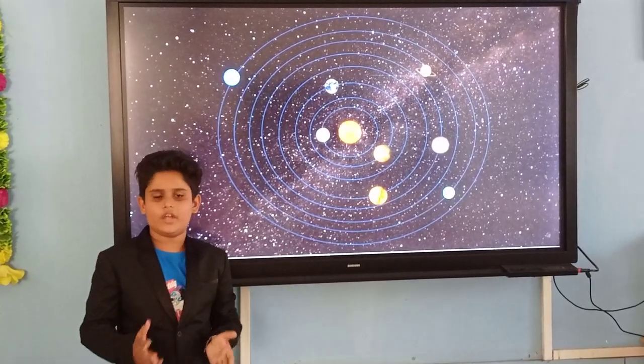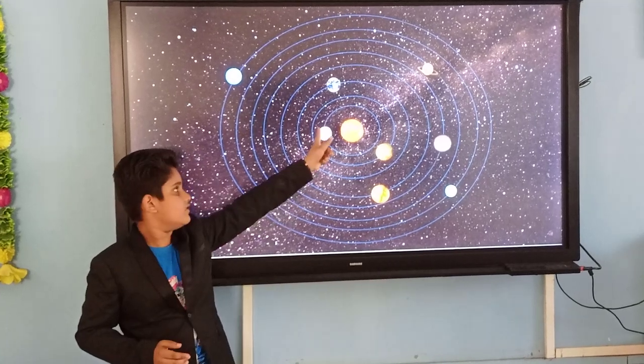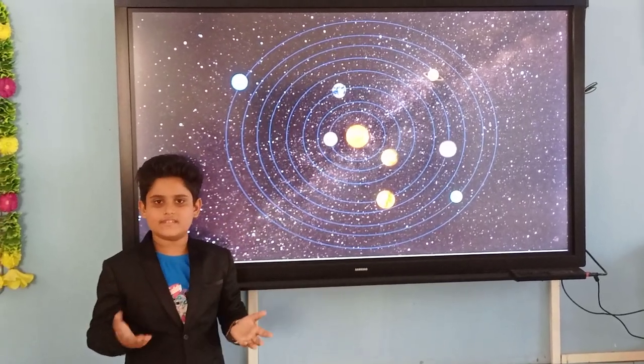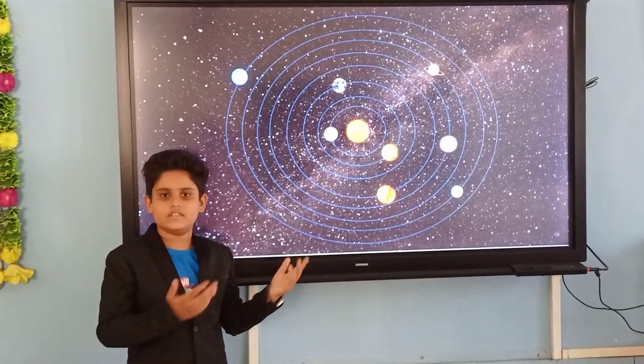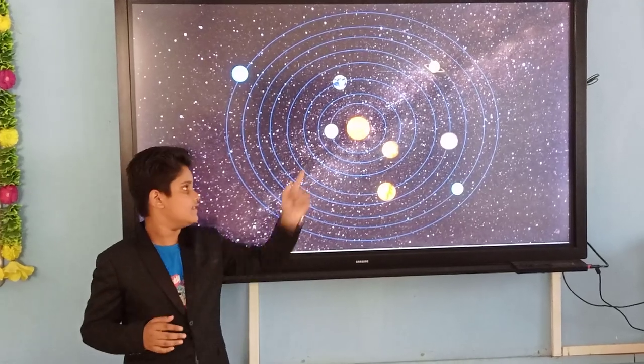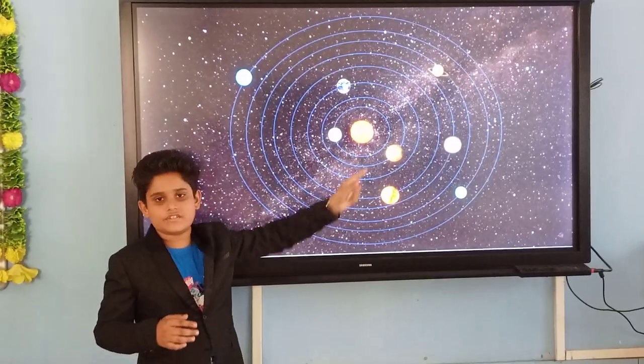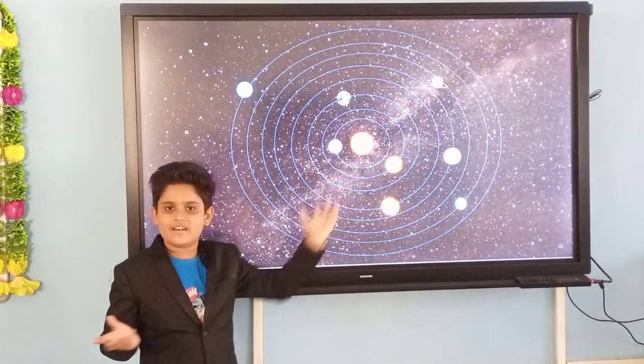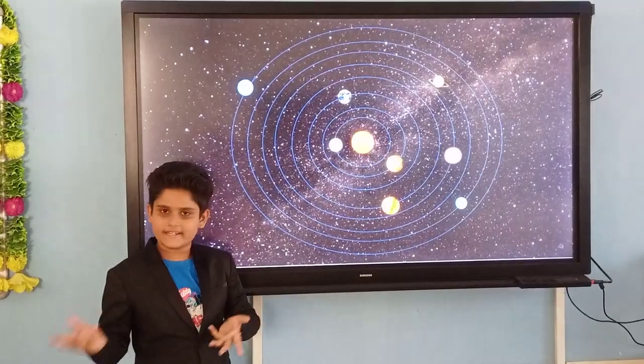Sun is made up of many gases: hydrogen, helium, carbon dioxide and oxygen. Next is Mercury. Mercury is the smallest planet in the solar system and it is the first planet. It is nearest to the sun and it is gray in color.